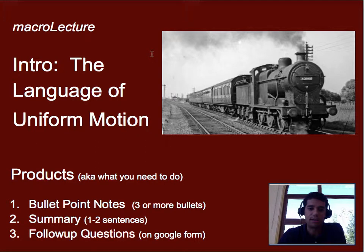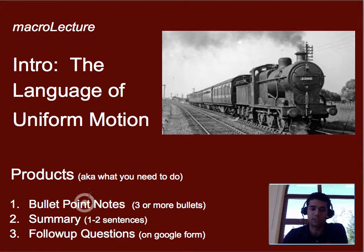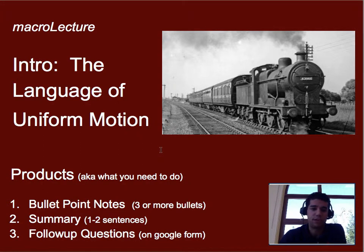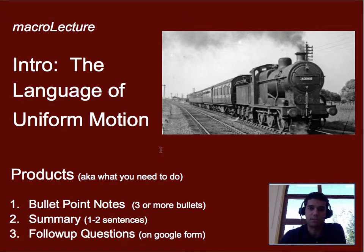In order for you to get full credit for this, you need to have the following products listed down here on the bottom. You need three or more bullet points worth of notes, a summary which is one to two sentences talking about what this was about, and then you need to answer any follow-up questions, usually on a Google Form, but sometimes they might be on paper or some other place.